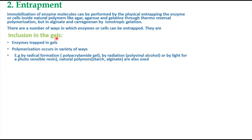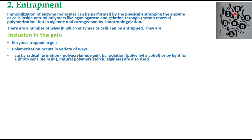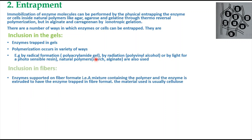There are a number of ways in which cells or enzymes can be entrapped. The first is inclusion in gels, where we take gels that entrap the enzymes within them. Polymerization can occur in a variety of ways: radical formation in polyacrylamide gel, by radiation, polyvinyl alcohol, by light for photosensitive resins, or natural polymers like starch and alginates.